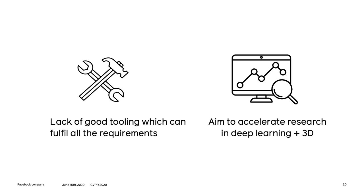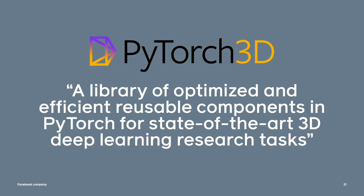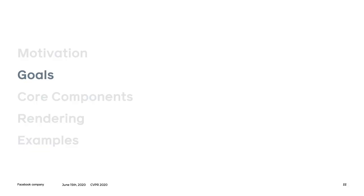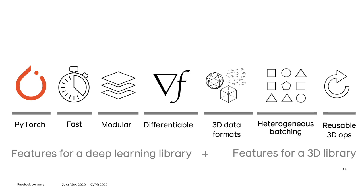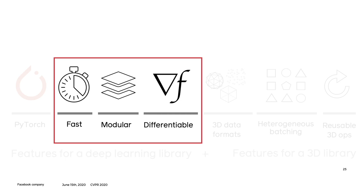We found that for 3D deep learning tasks there weren't any good tools fulfilling all these requirements. So we built PyTorch 3D — a library of optimized and reusable components for 3D deep learning research. The goals are to combine the features of a good deep learning library: being fast, modular, differentiable, and compatible with PyTorch. Combined with features needed for 3D data: supporting different formats like meshes and point clouds, heterogeneous batching, and implementations of common 3D operators.